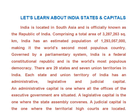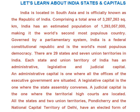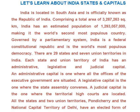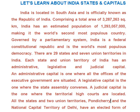Each state and union territory of India has an administrative, legislative, and judicial capital. An administrative capital is one where all offices of the executive government are situated. A legislative capital is the one where the state assembly governs. A judicial capital is the one where the territorial high courts are located.